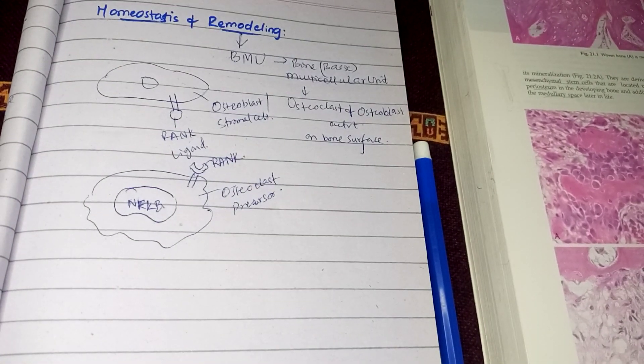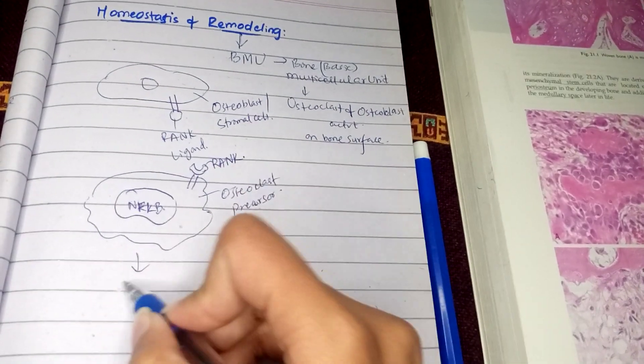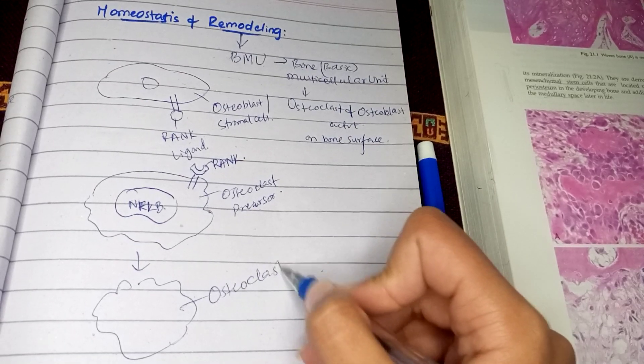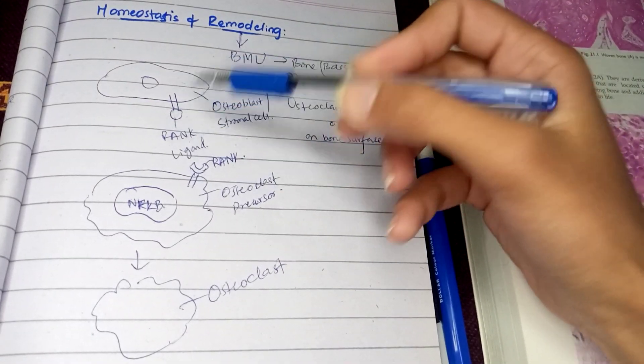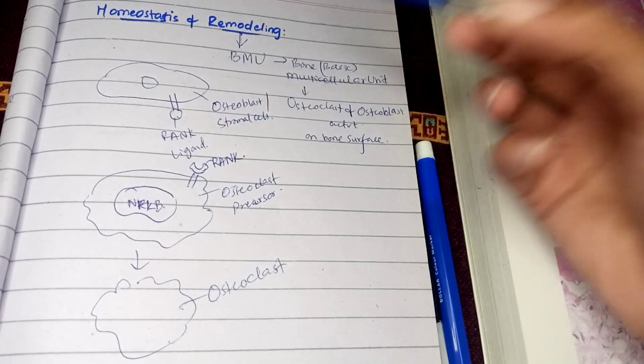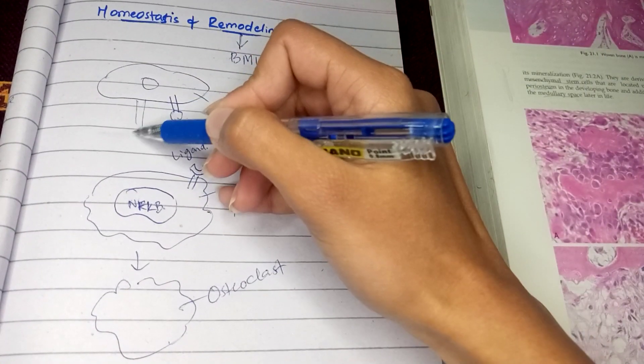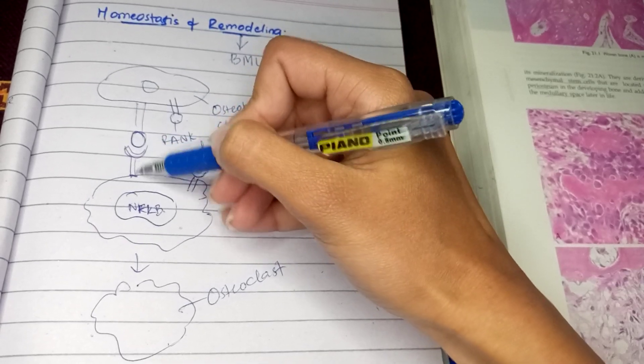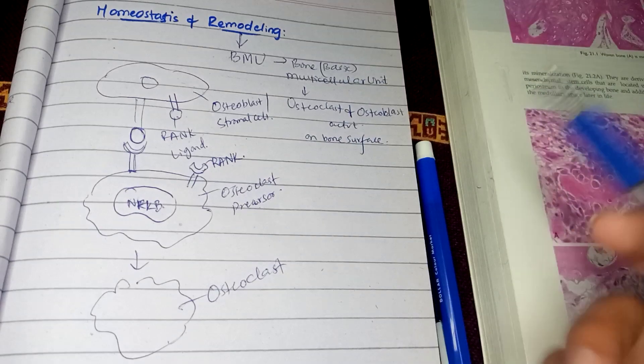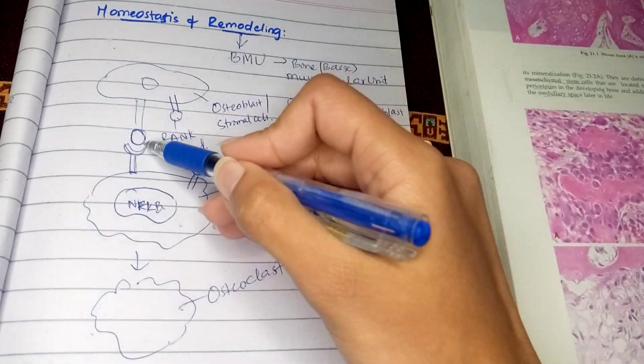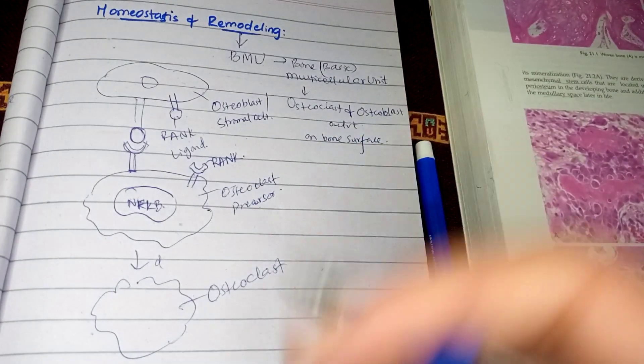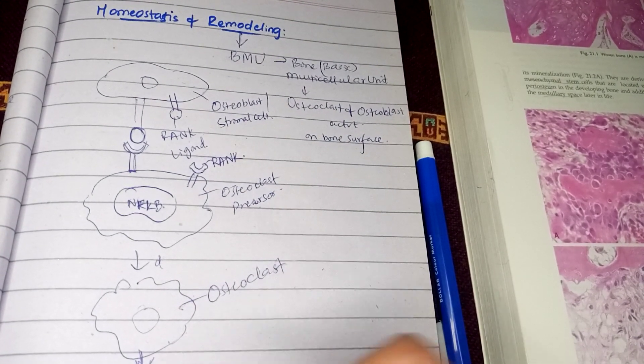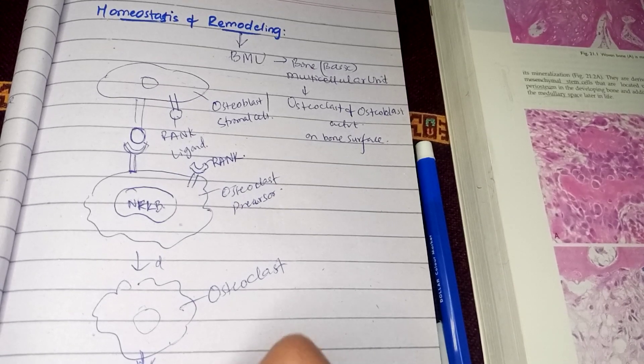For the differentiation of this osteoclast into a mature osteoclast cell, what is needed? The interaction between the rank ligand and the rank receptor. This rank ligand binds to the rank receptors on the osteoclast, initiating differentiation of osteoclast precursor cells into osteoclasts. This helps in the bone resorption process.